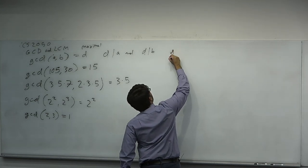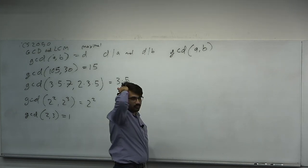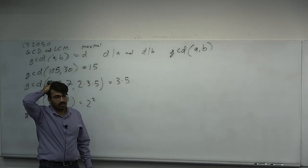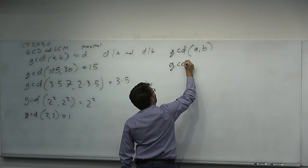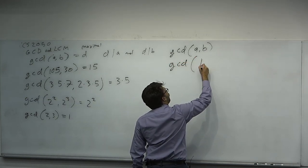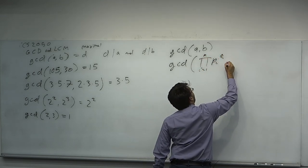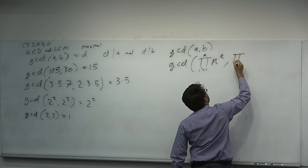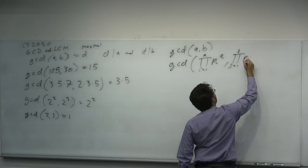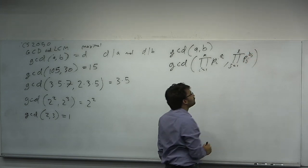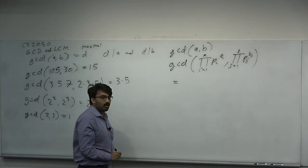Let's write out two numbers using their prime factorizations. We proved the fundamental theorem of arithmetic: A is written as a product of prime powers, and B is also written as a unique product of prime powers. The GCD of A and B, written as products of primes, should equal the product of PI to the minimum of AI and BI.